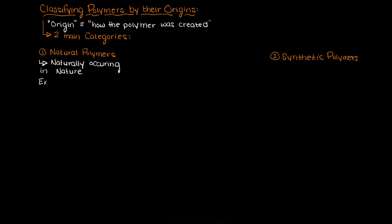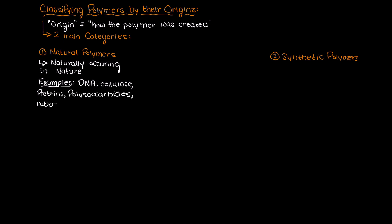Some common natural polymers that you may know of are DNA, cellulose, proteins, polysaccharides like the starch in potatoes, rubber from a rubber tree — not vulcanized rubber like in a tire — wool, and silk, just to name a few.